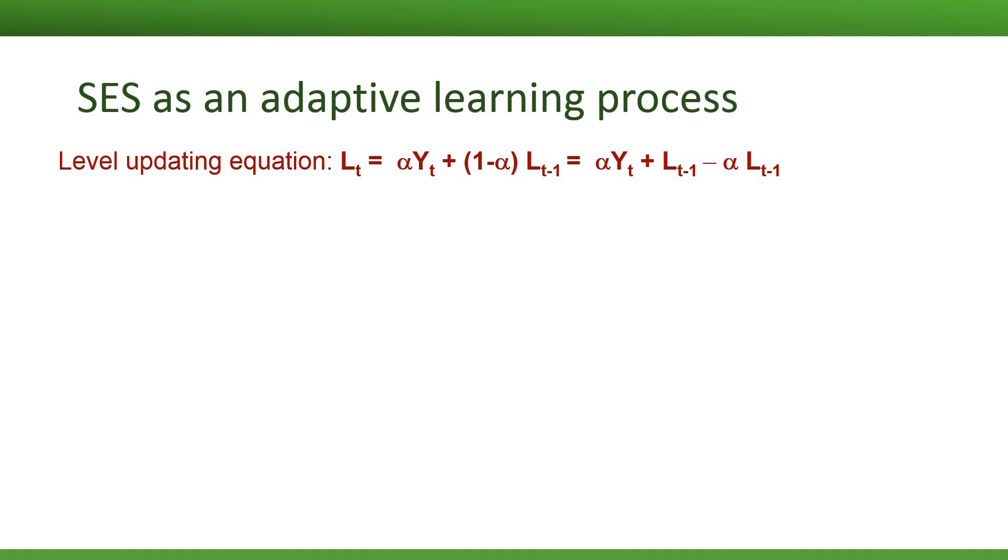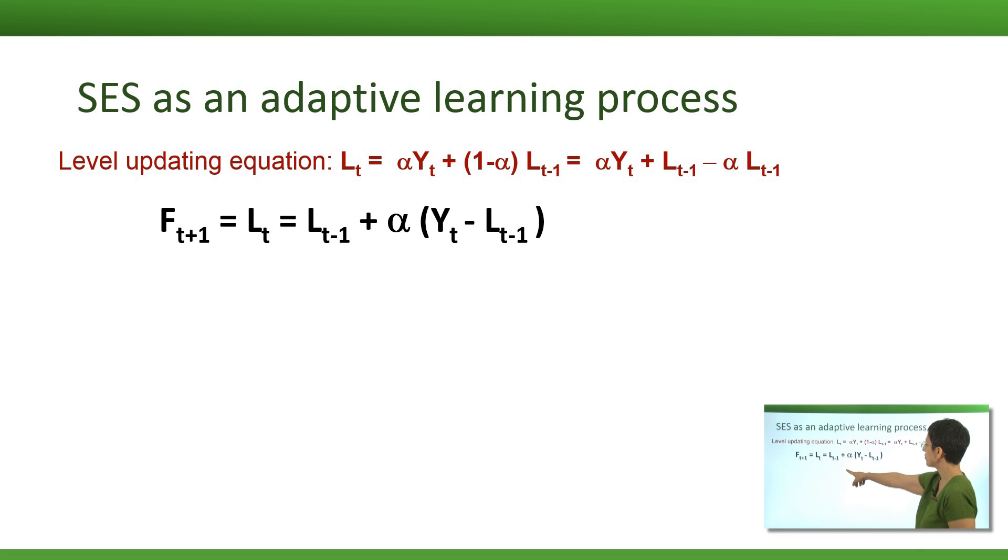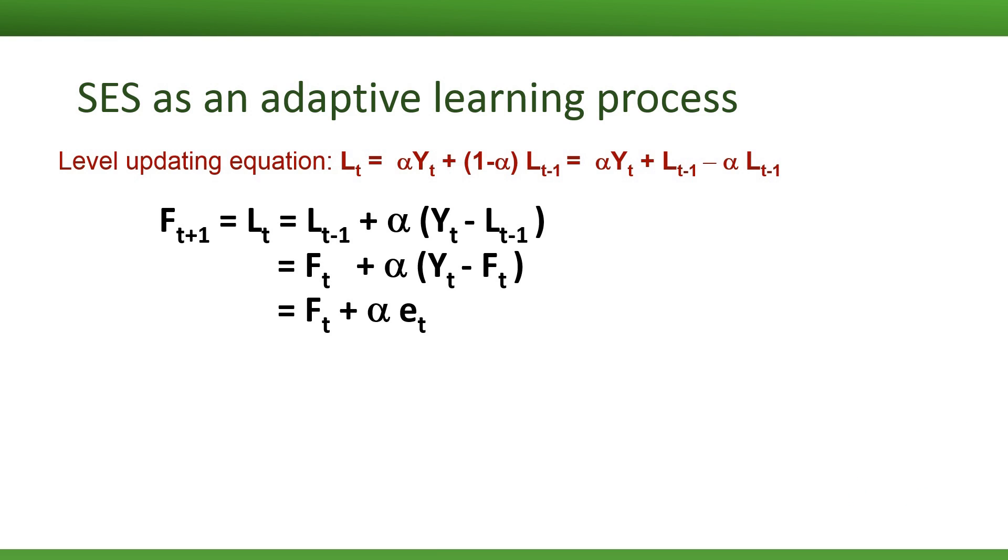Another way to think of simple exponential smoothing is as an adaptive learning algorithm. Again, let's rewrite the level updating equation a little bit differently. By opening the parentheses and reordering the components, I can write L sub t is equal to alpha times y_t plus L sub t minus 1 minus alpha times L sub t minus 1. So our one-step-ahead forecast, F sub t plus 1, can be written as L sub t minus 1 plus alpha times (y_t minus L_t minus 1). From here, we can substitute L_t minus 1 with F_t, because that's exactly the forecast for time t. And the next step is to notice that in the parentheses, y sub t minus F sub t is actually the forecast error. So we can write that as E sub t.